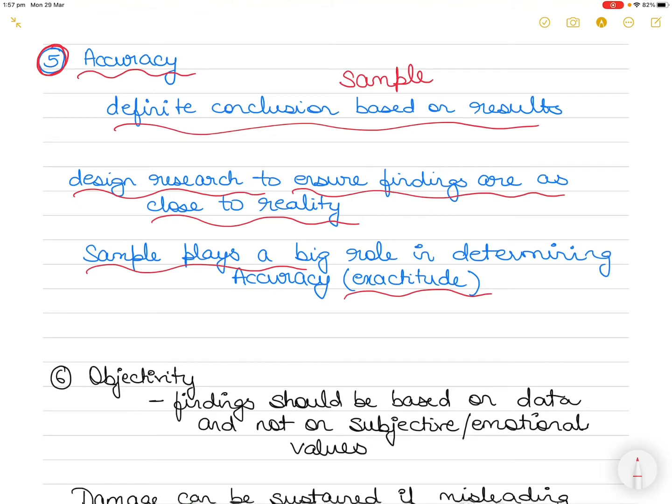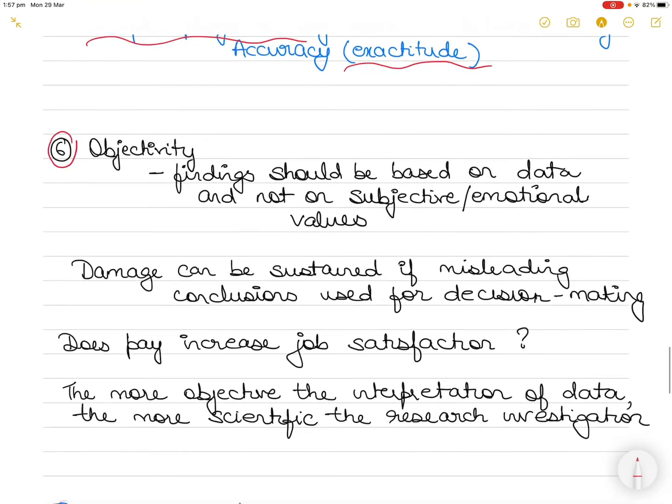Number six is objectivity. The conclusions drawn and the interpretation of results of data analysis should be objective. Findings should be based on the actual data and not based on subjective or emotional values. If you had a research question that asked whether greater participation in decision-making would increase organizational commitment...